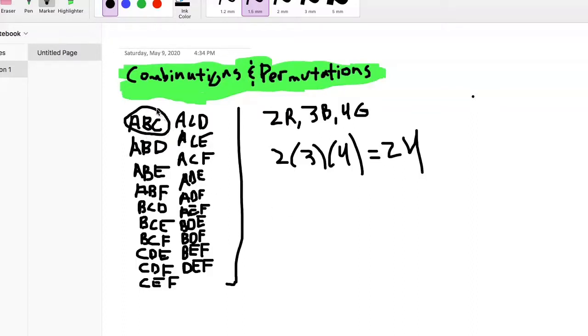Then just going down the list you have ABD, ABE, ABF. That's all of the combinations that have A and B in them.